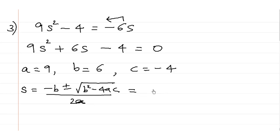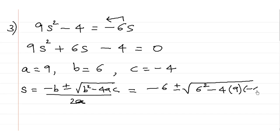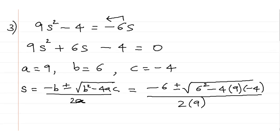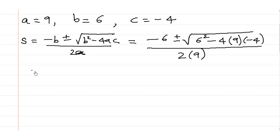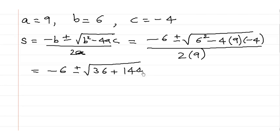Let's substitute: s = (-6 ± √(6² - 4 × 9 × (-4))) / (2 × 9). This equals (-6 ± √(36 + 144)) / 18, which gives (-6 ± √180) / 18.